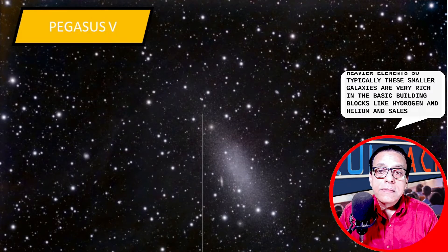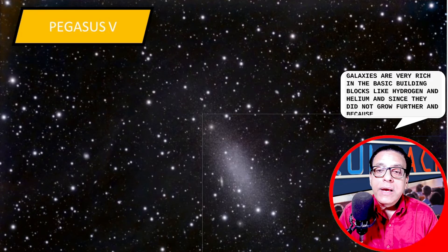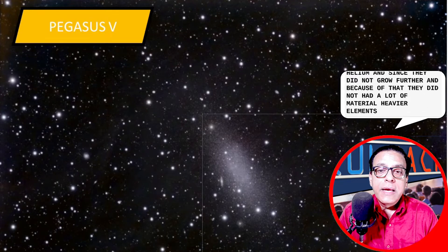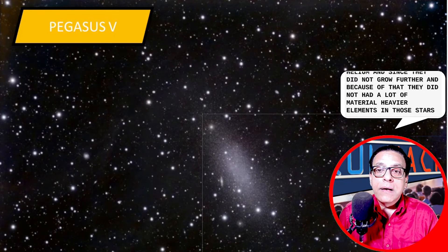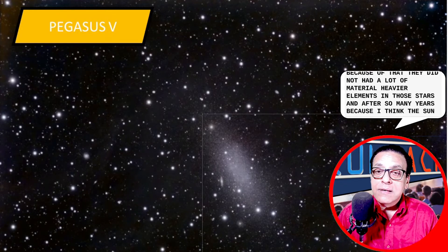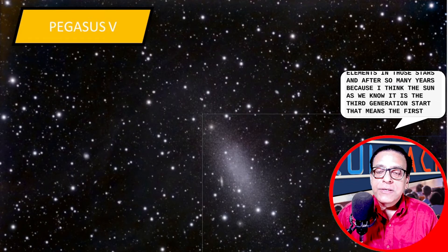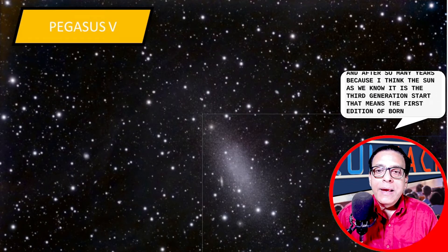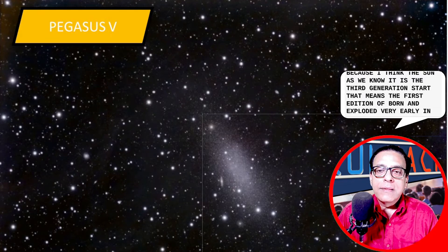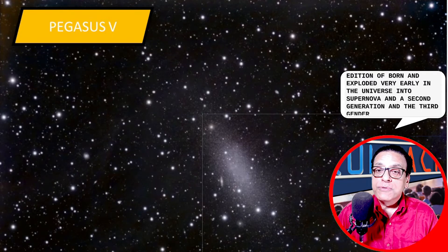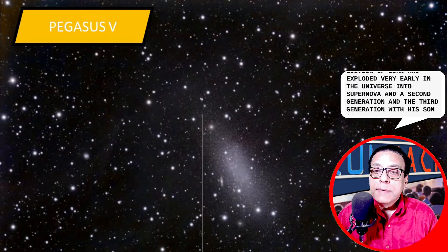And since they did not grow further, they did not have a lot of material, heavier elements in those stars. And after so many years, because the sun as we know it is the third generation star, that means the first generation were born and exploded very early in the universe into supernova. And then second generation and the third generation, which is sun.